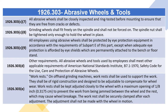1926.303(d): All abrasive wheels and tools used by employees shall meet other applicable requirements of ANSI B7.1-1970 Safety Code for the Use, Care, and Protection of Abrasive Wheels. 1926.303(e) Work Rests on Offhand Grinding Machines: Work rests shall be used to support the work. They shall be of rigid construction and designed to be adjustable to compensate for wheel wear. Work rests shall be kept adjusted closely to the wheel with a maximum opening of one-eighth inch (0.3175 centimeters) to prevent the work from being jammed between the wheel and the rest. The work rest shall be securely clamped after each adjustment, and adjustment shall not be made with the wheel in motion.